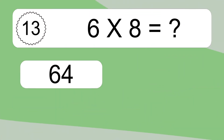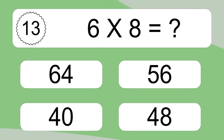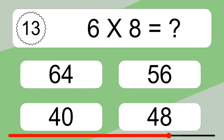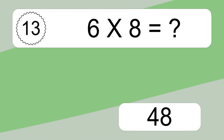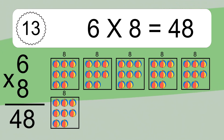6 times 8 equals what? 6 times 8 equals 48.